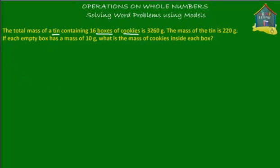Let's try to draw a picture. Say that this is your cookie box. Let's make some cookies inside this. So these are the cookies — the brown ones are the cookies and the yellow one is the cookie box.